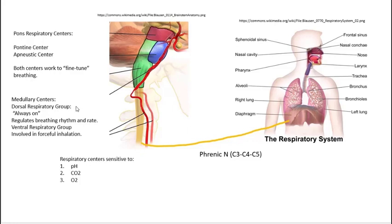Of the two centers in the medulla, the dorsal respiratory group is a little more important because I call it the always-on center. It regulates breathing rate and rhythm. So it's like the main regulator in the brainstem. The ventral respiratory group is only involved in forceful inhalation. So when you're taking a deep breath, that's coming from the ventral respiratory group.